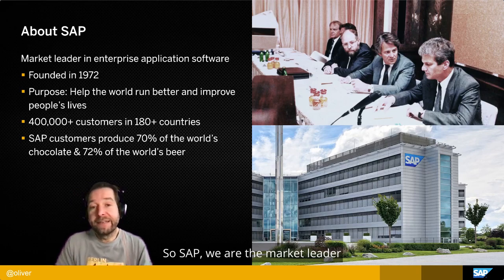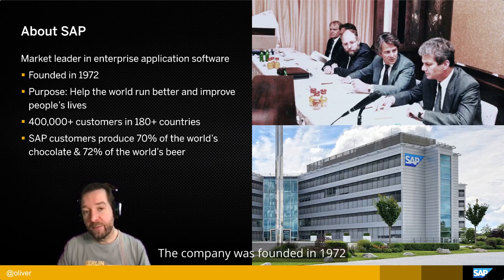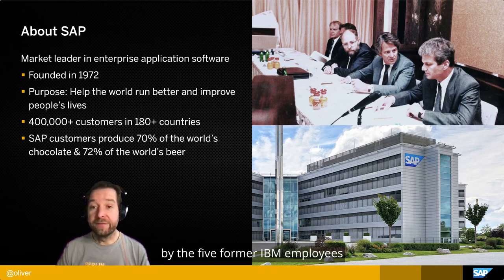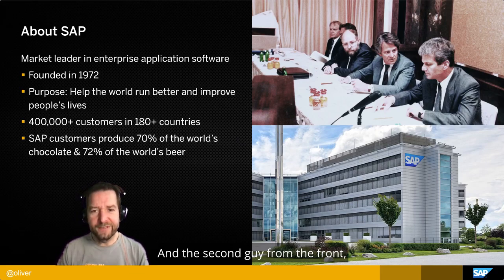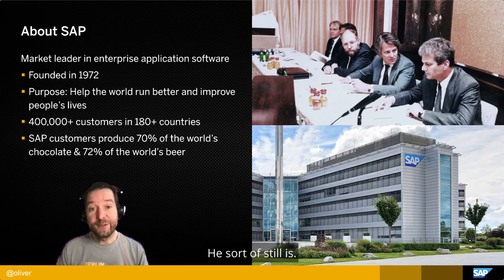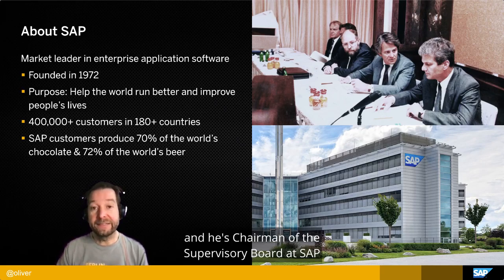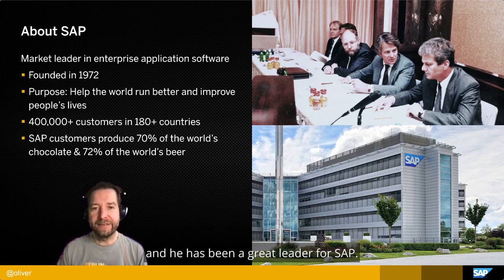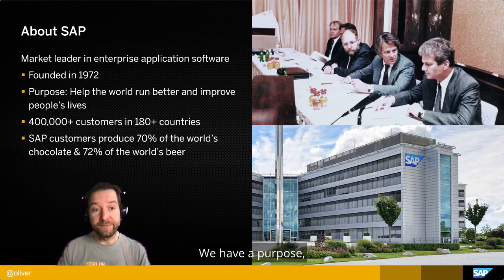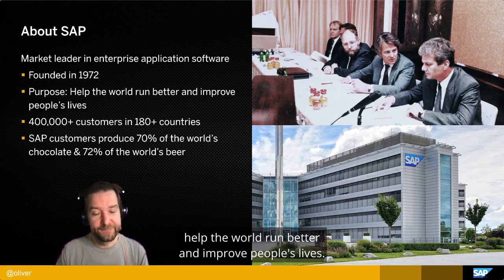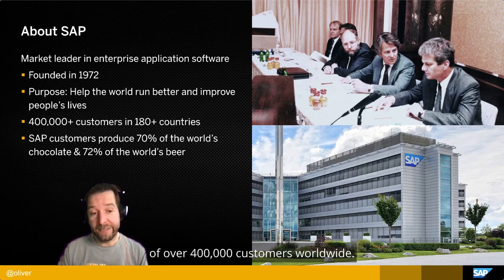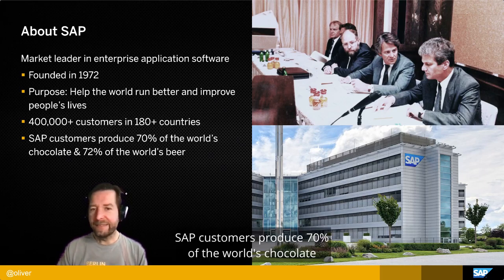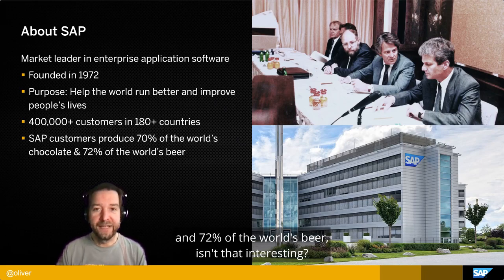SAP — we are the market leader in enterprise application software. The company was founded in 1972 by five former IBM employees. The second guy from the front, who looks like he is in charge — he sort of still is. This is Hasso Plattner, chairman of the supervisory board at SAP and a great leader. Our purpose: help the world run better and improve people's lives. We run the business transactions of over 400,000 customers worldwide. As a fun fact, SAP customers produce 70% of the world's chocolate and 72% of the world's beer.